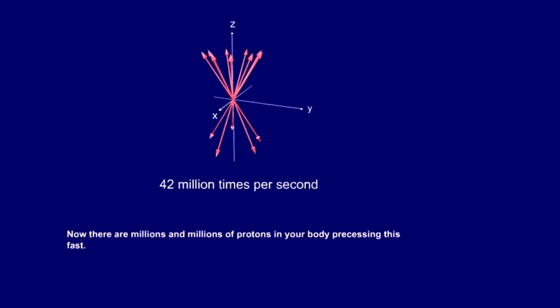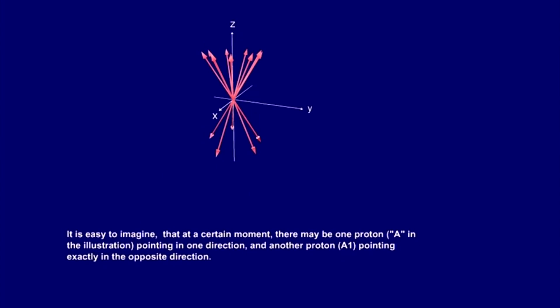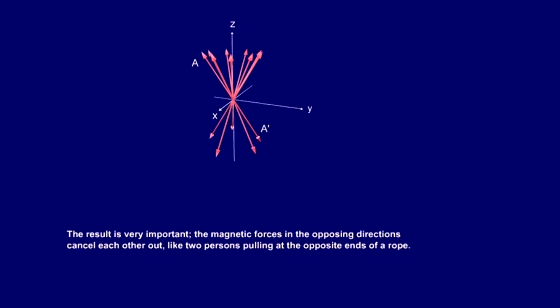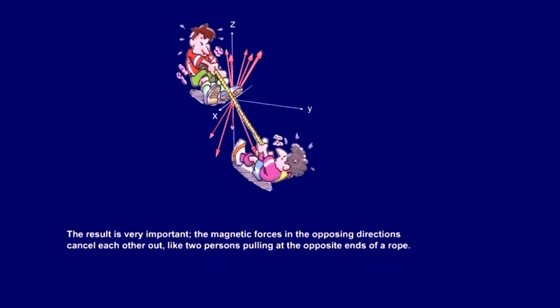Now there are millions and millions of protons in your body precessing this fast. It's easy to imagine that at a certain moment there may be one proton, A, pointing in one direction, and another proton, A1, pointing exactly in the opposite direction. The result is very important: the magnetic forces in the opposing directions cancel each other out, like two persons pulling at the opposite ends of a rope.